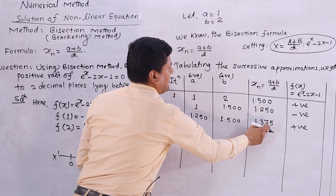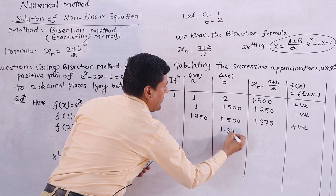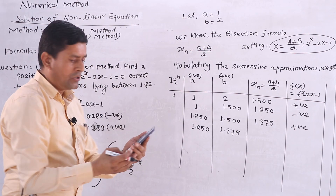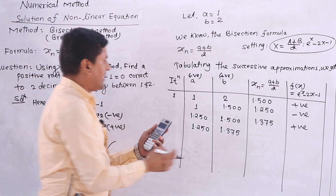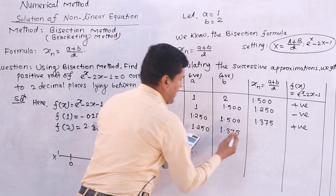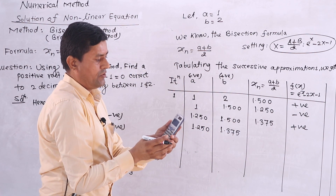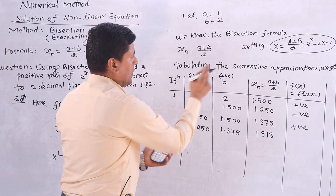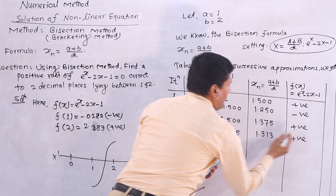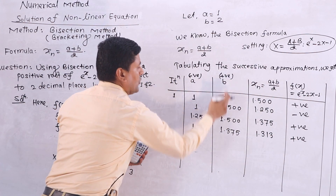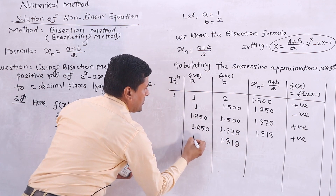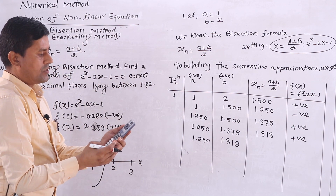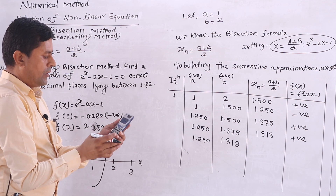Continuing the iterations: x_n = 1.375, then with updated bounds x_n = 1.313. Evaluating f(1.313) and updating the bracketing interval accordingly.